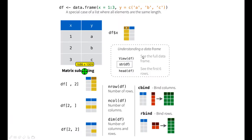Let me show you this from the base R cheat sheet. You have here all the things you can do with data frames. One way to create a data frame is importing it, as we've done. The other way is using the function data.frame(), where you specify columns — for example, one column with values 1, 2, 3 and another with a, b, c. You also have a quick summary of useful operations: view, str, head (shows the first six rows), tail (shows the last six rows), and you can check the number of rows, columns, and dimensions.